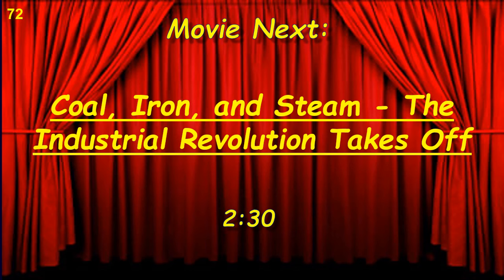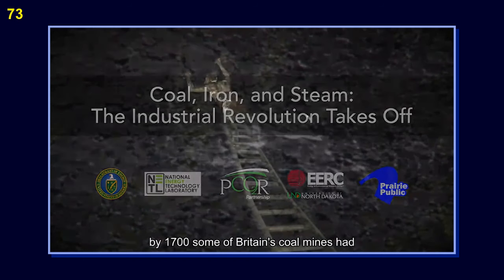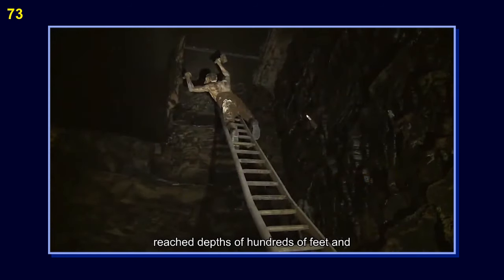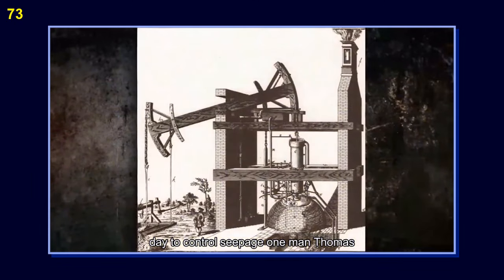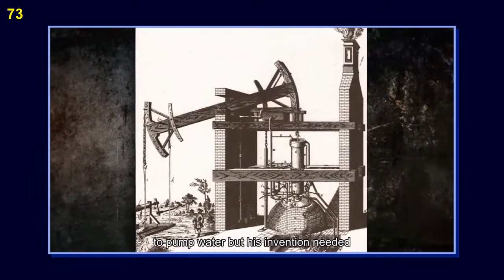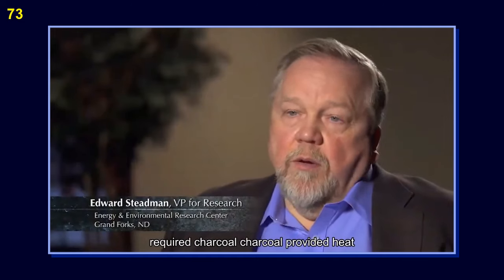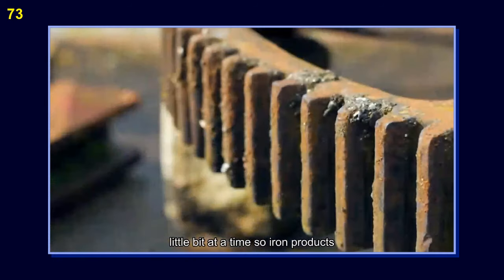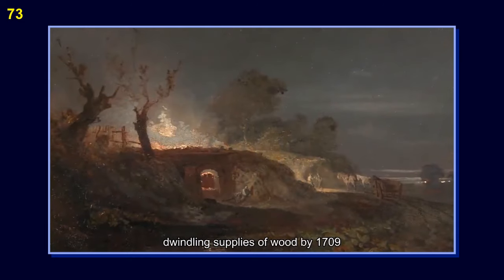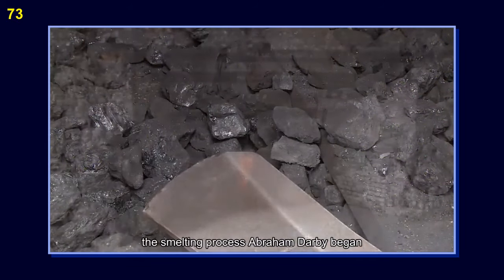We will next have a short video clip on coal, iron, and steam: the industrial revolution takes off. By 1700, some of Britain's coal mines had reached depths of hundreds of feet, and horse-powered water pumps ran night and day to control seepage. Thomas Newcomen was looking for a cheaper way to pump water, but his invention needed better quality iron. Iron smelting required charcoal, which provided heat and the carbon needed to extract the iron from the ore. You could only make a little bit at a time, so iron products were very expensive. Charcoal came from dwindling supplies of wood. By 1709, Abraham Darby was using coal as the source of both the carbon and heat in the smelting process.